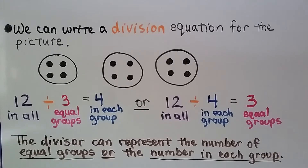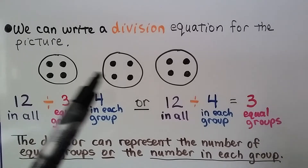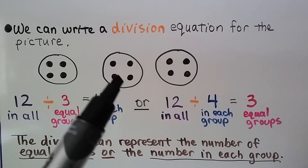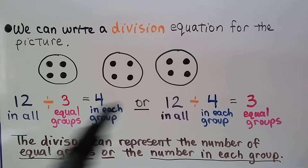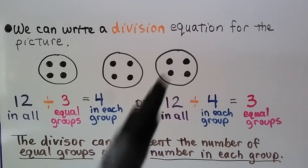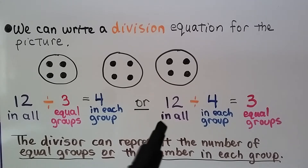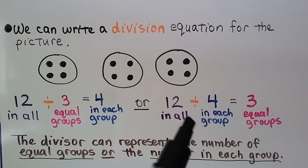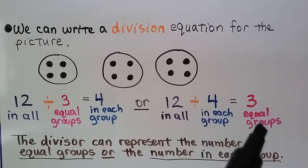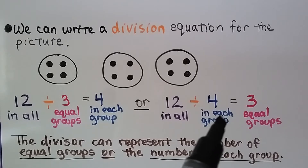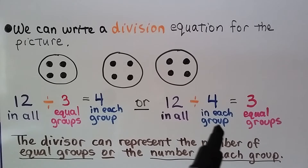We can write a division equation for a picture. Here we have a picture of 3 groups with 4 in each group. We count them and know there's 12 in all. We see there's 3 groups and 4 in each group. We can also say there's 12 in all, 4 in each group, and 3 equal groups. The divisor can represent the number of equal groups or the number in each group.